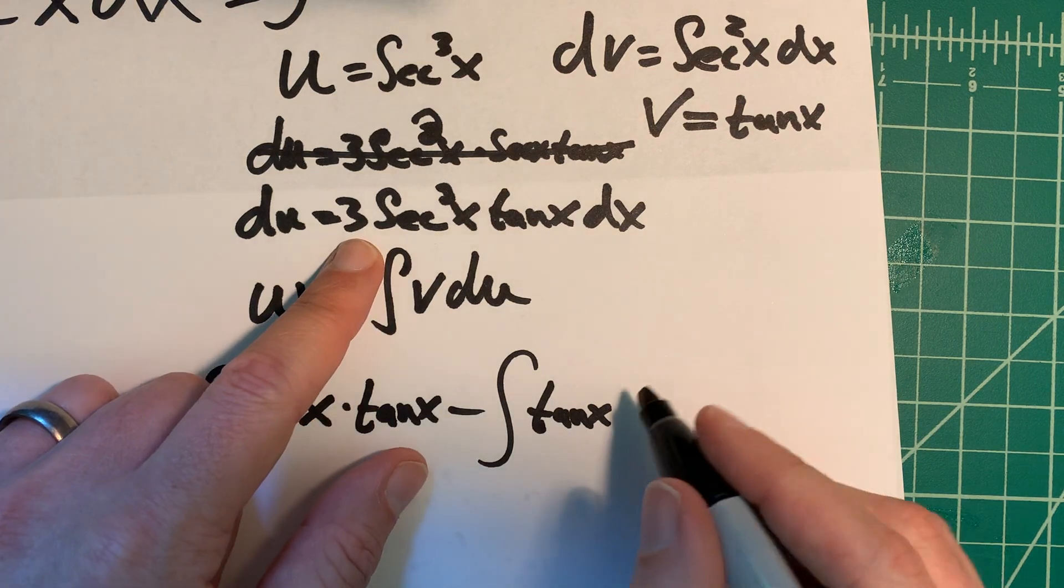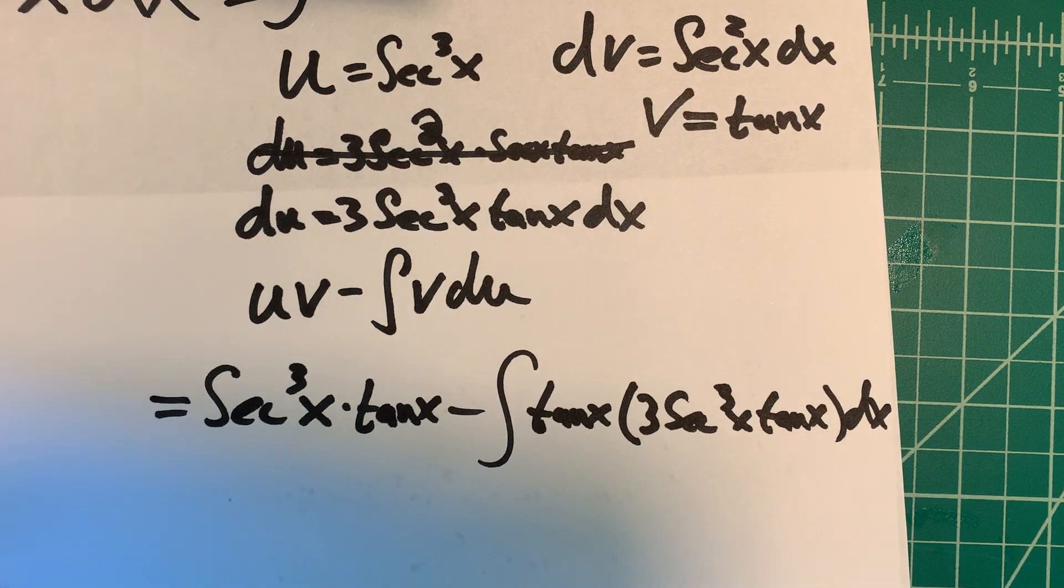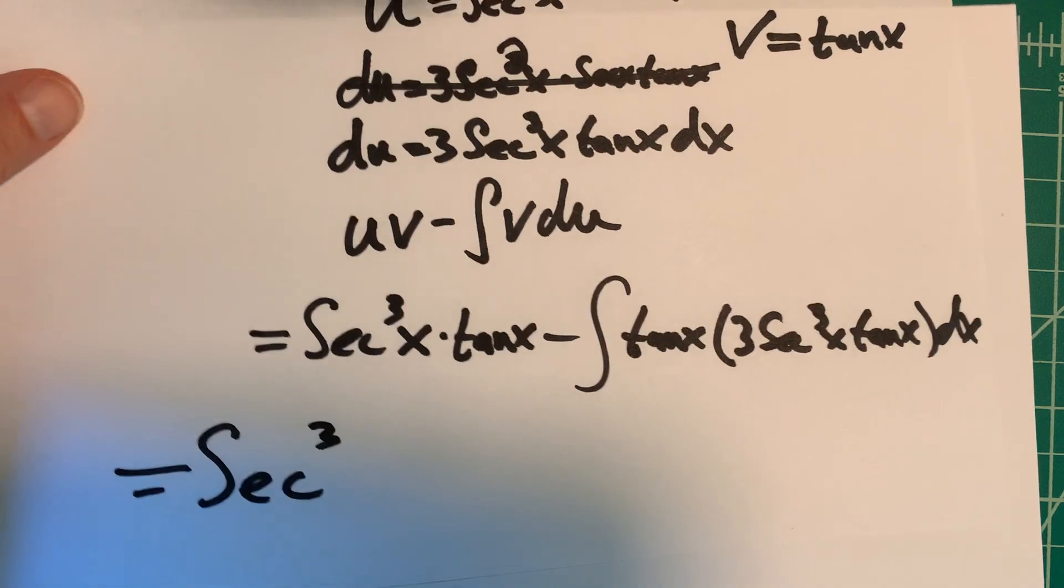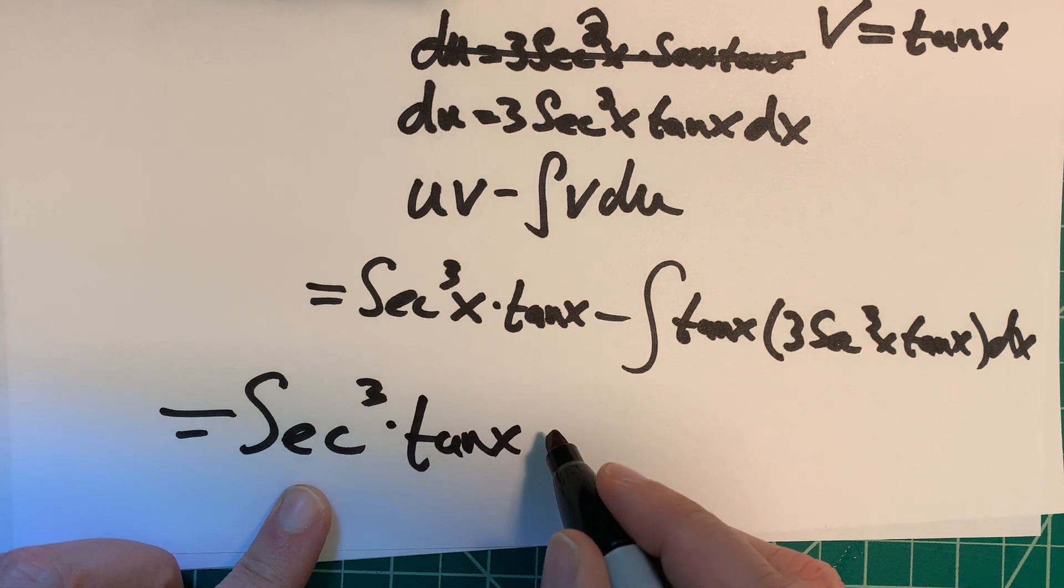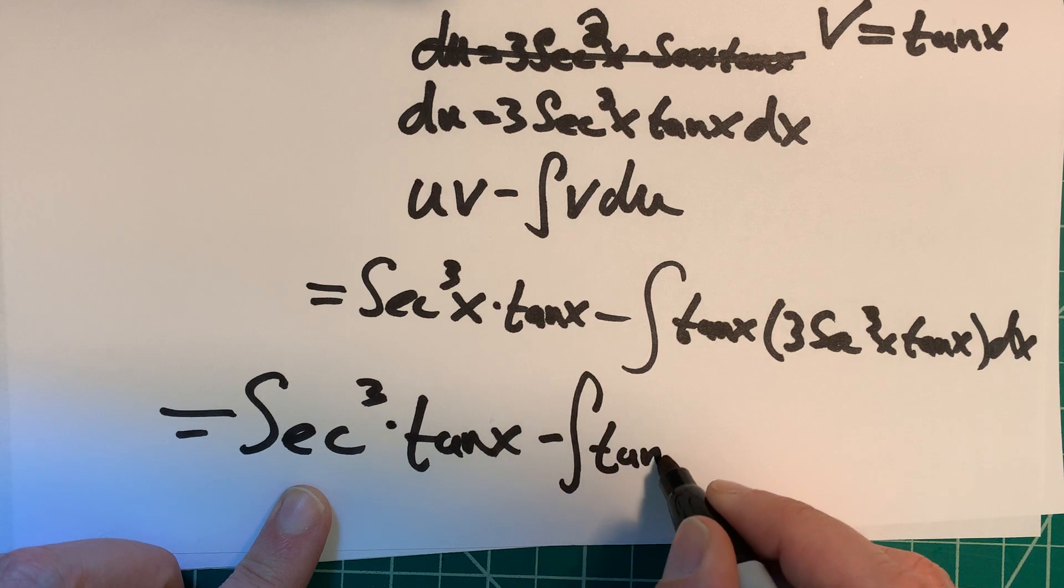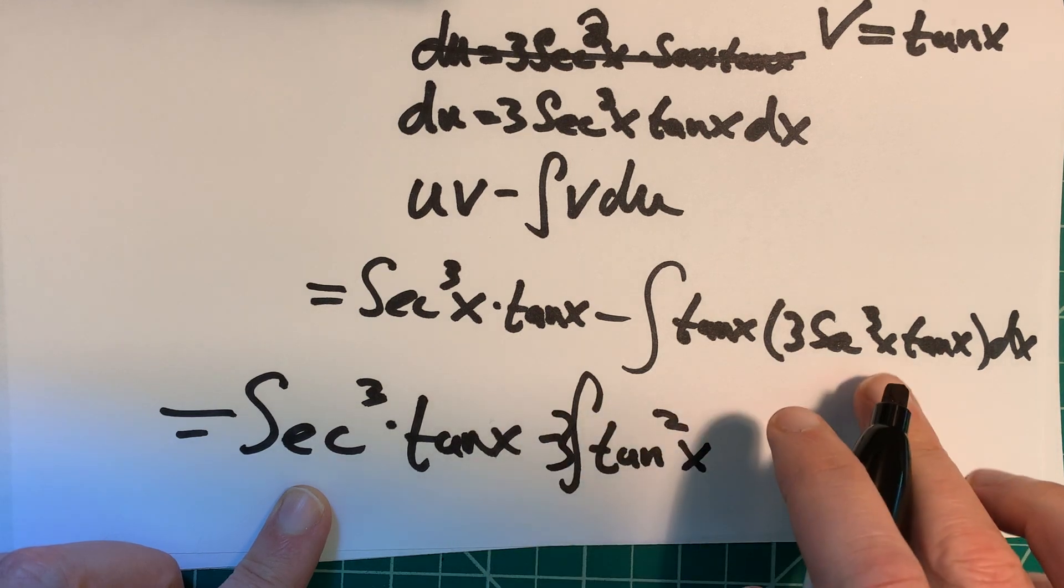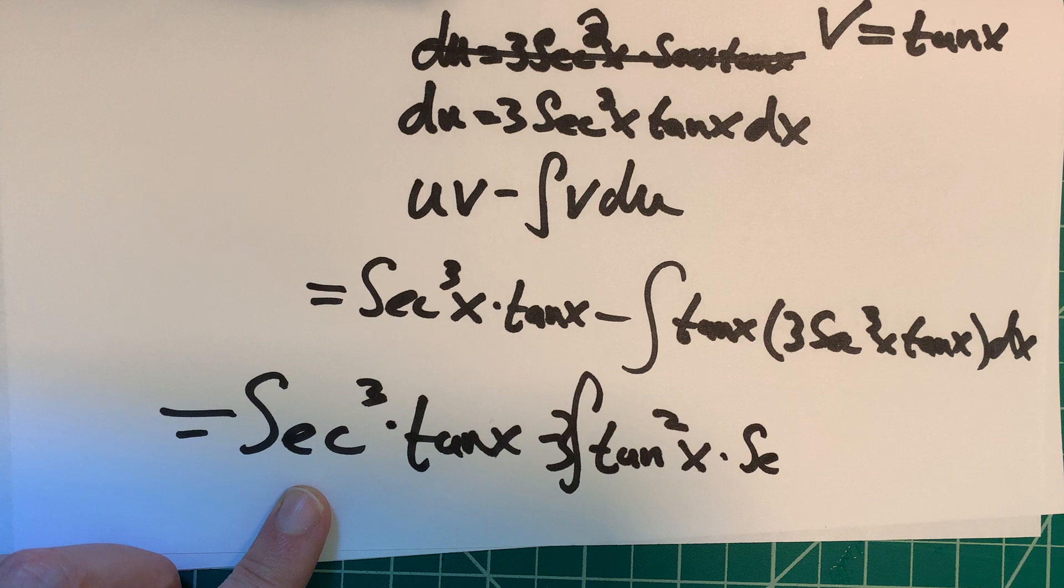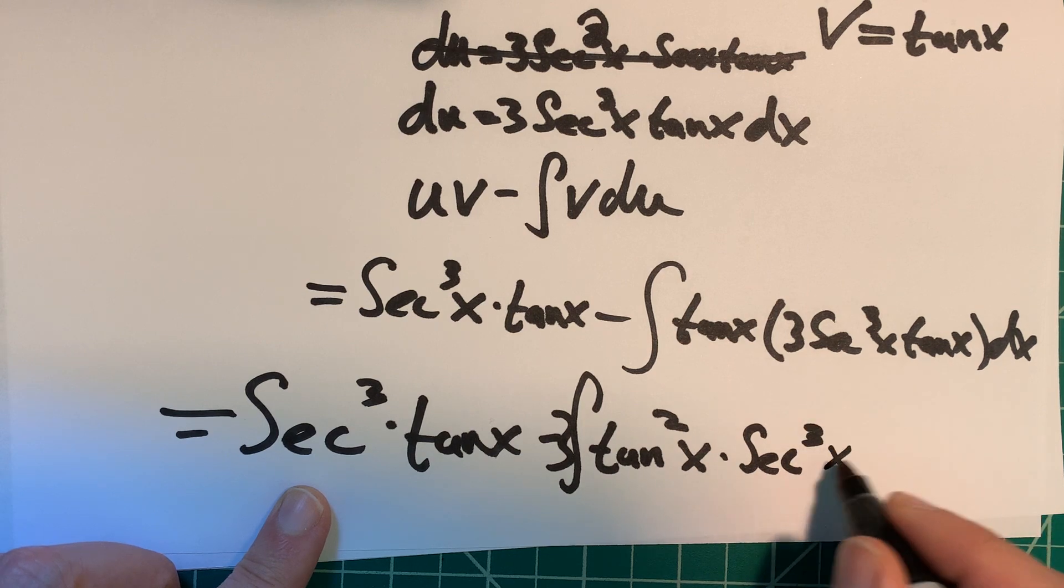And then du is this nasty thing right here, 3 secant cubed x tangent x dx. So I'm going to rewrite this. This is horrendous. So this is secant cubed tangent x minus the integral. I notice I have tangent tangent, so that's tangent squared x. And then I have a 3, which I should have just put out here. And then secant squared, that's a squared. That's a secant cubed x dx.